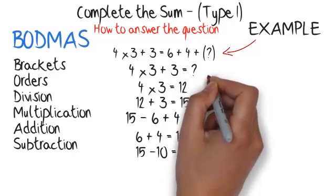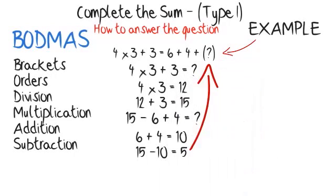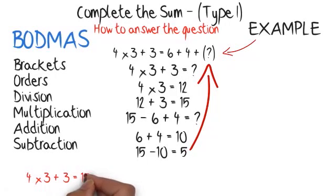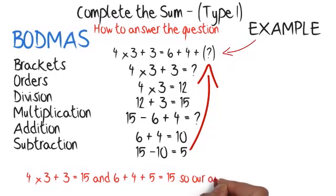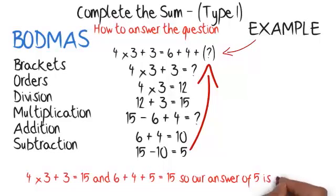So the number that needs to go in the gap is 5. To check that our answer is right, put the number into the equation and check that both sides equal 15. 4 multiplied by 3 plus 3 equals 15, and 6 plus 4 plus 5 equals 15 — so our answer of 5 is correct.